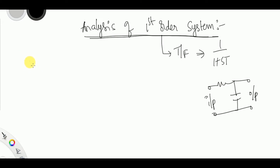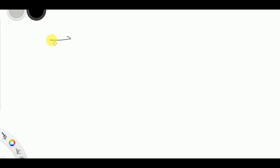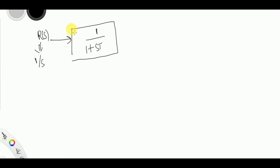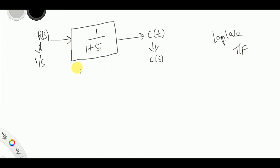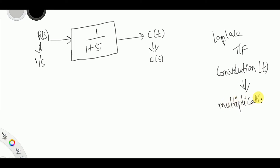Now let me design the system. Here we take input R(s) as a unit step input, so its Laplace transform is 1/s. This is given as input to the standard first order system, that is 1/(1+sT), and here we are going to get the output in the s-domain, C(s). Now here we observe the beauty of Laplace transforms: convolution in the time domain simply becomes multiplication in the s-domain.